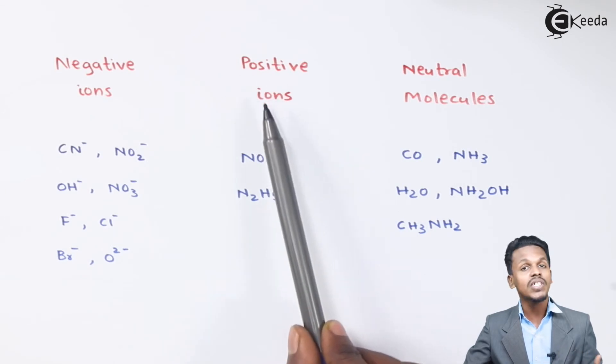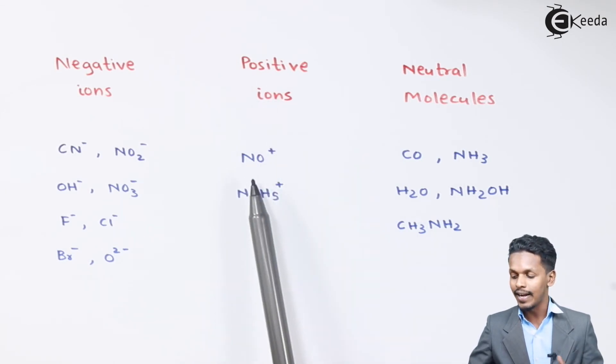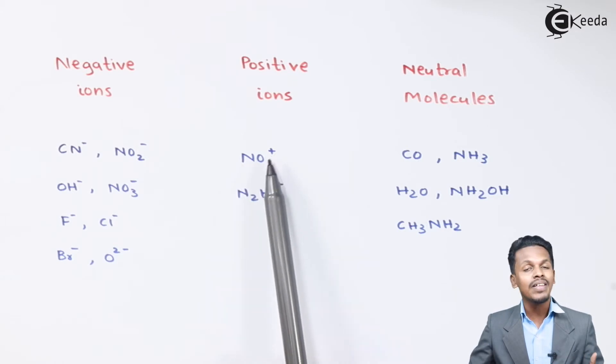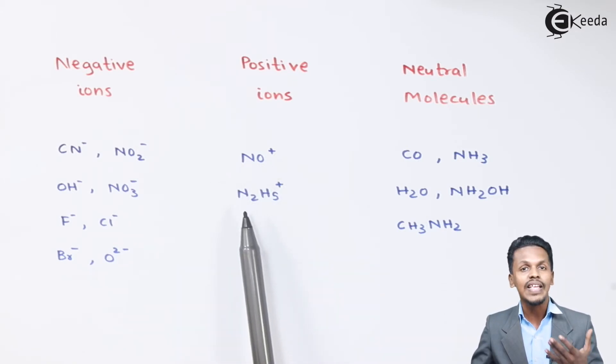And now let me talk about the positively charged ions. In that case I am talking about the first one that is NO plus which is known as nitrosylium ion. Talking about the next one that is N2H5 which is also known as hydrazinium.